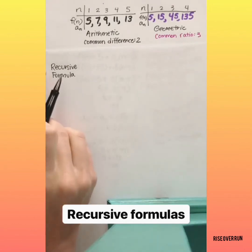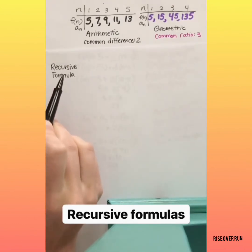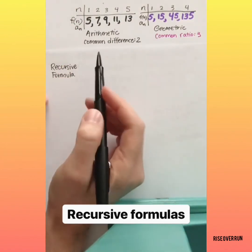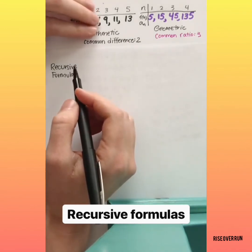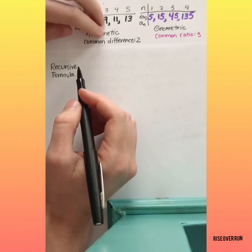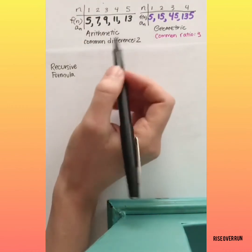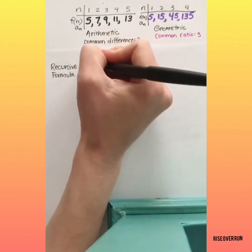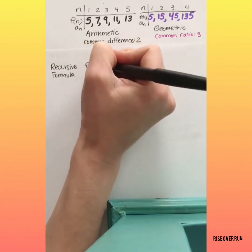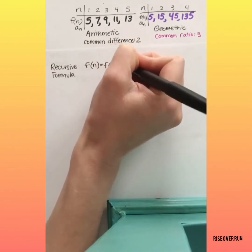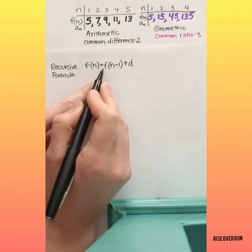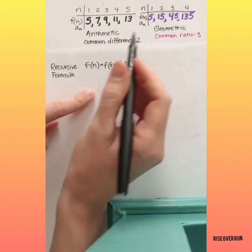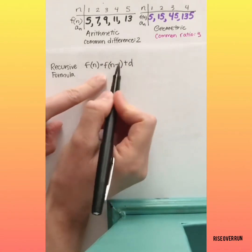Sometimes with sequences, you'll see recursive formulas. Recursive formulas rely on the term coming before the term that you want to find. They're not as useful, but if you have a sequence and you don't know where it started, you could use a recursive formula to help you keep determining the next terms. For a recursive formula for an arithmetic sequence, here is the basic setup: f of n equals f of n minus 1 plus d. Let's say you're looking for the 6th term — you have to plug in the 5th term.